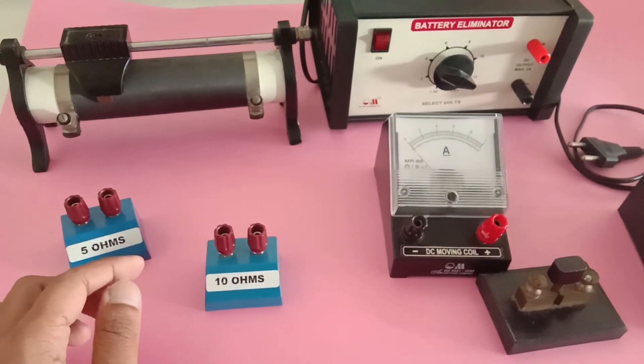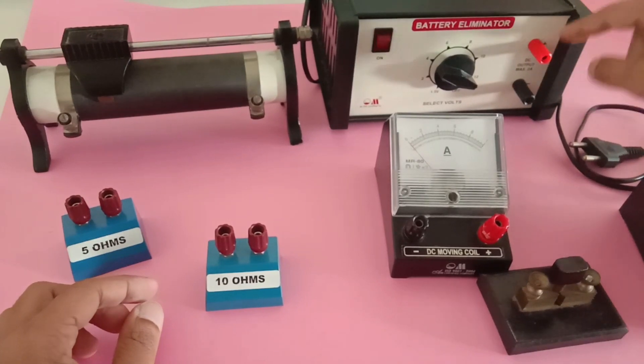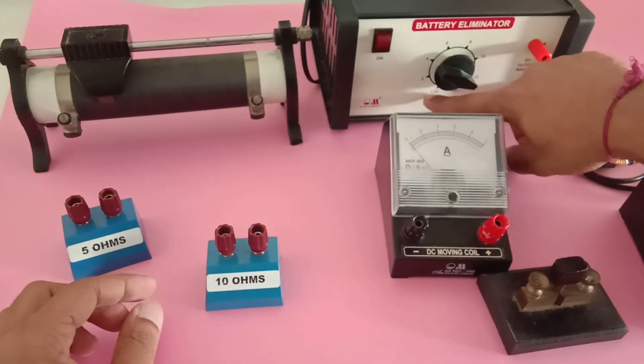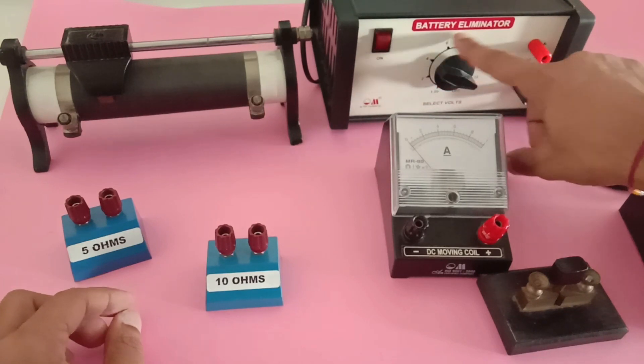This is our battery eliminator. I am going to connect this to AC power supply and it can convert to 1.5 volts, 2 volts, 4, 6, 8, 10, or 12 volts DC.